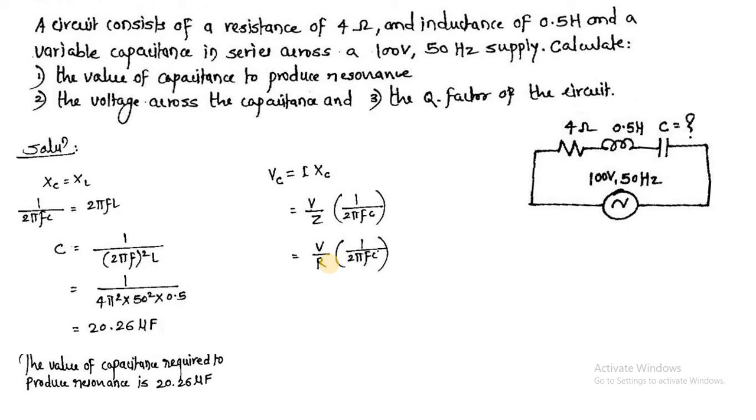Your I is equal to V upon R into 1 upon 2πFC, where V is 100, R is 4 ohm and 1 upon 2π into 50 hertz frequency. C is 20.26 microfarad, so 20.26 into 10 raised to minus 6. The voltage we are getting across capacitance is 3927.81 volts.